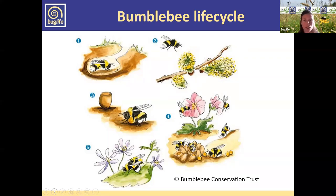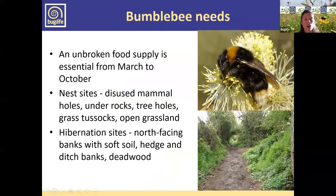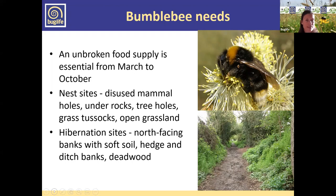Just to reiterate what bumblebees actually need: they need an unbroken food supply from March when they emerge right through to October when they start to hibernate again. They need somewhere to nest — used mammal holes, tussocky grass tussocks, tree holes, and open grassland are all good. They also need hibernation sites which are often north-facing, quite sheltered, and at a constant temperature.